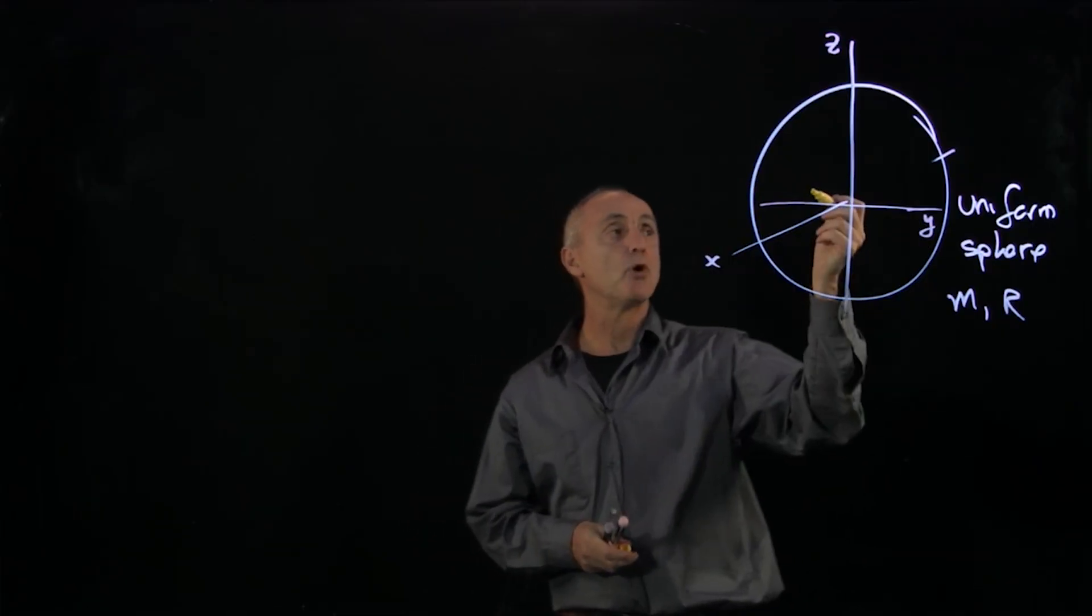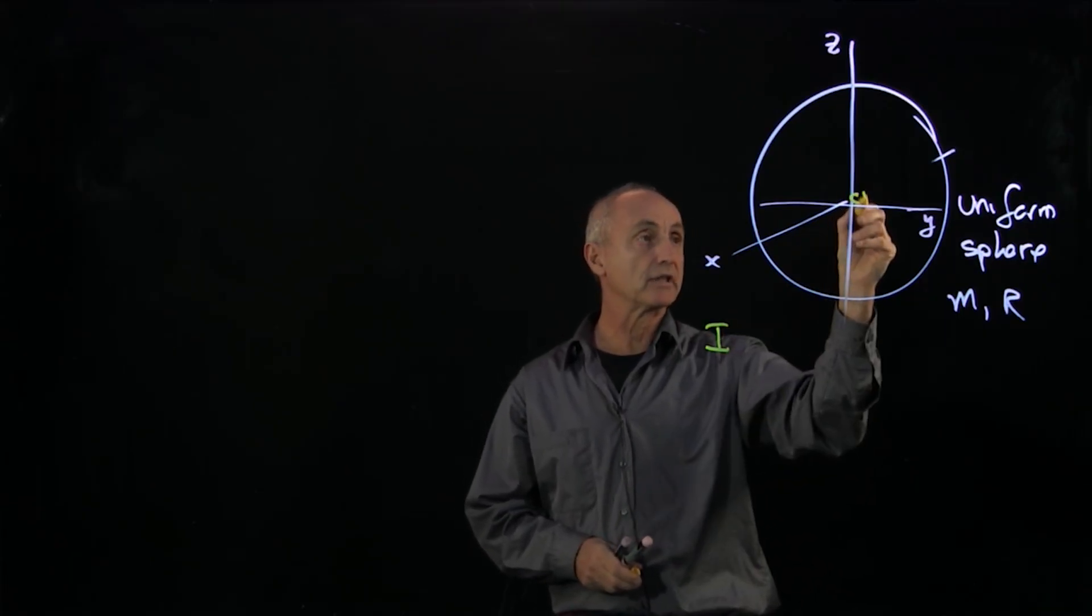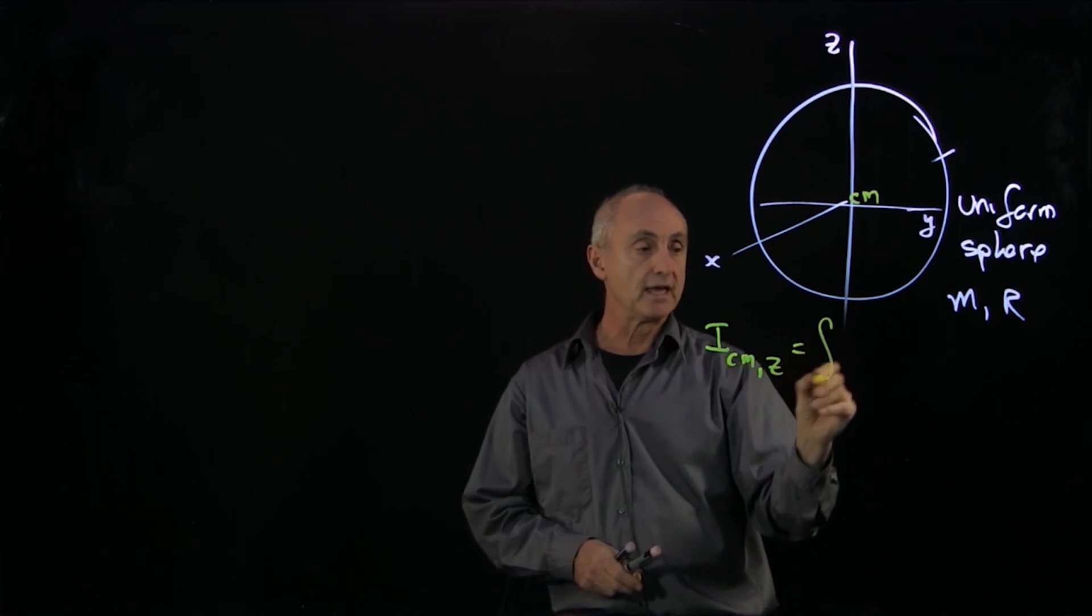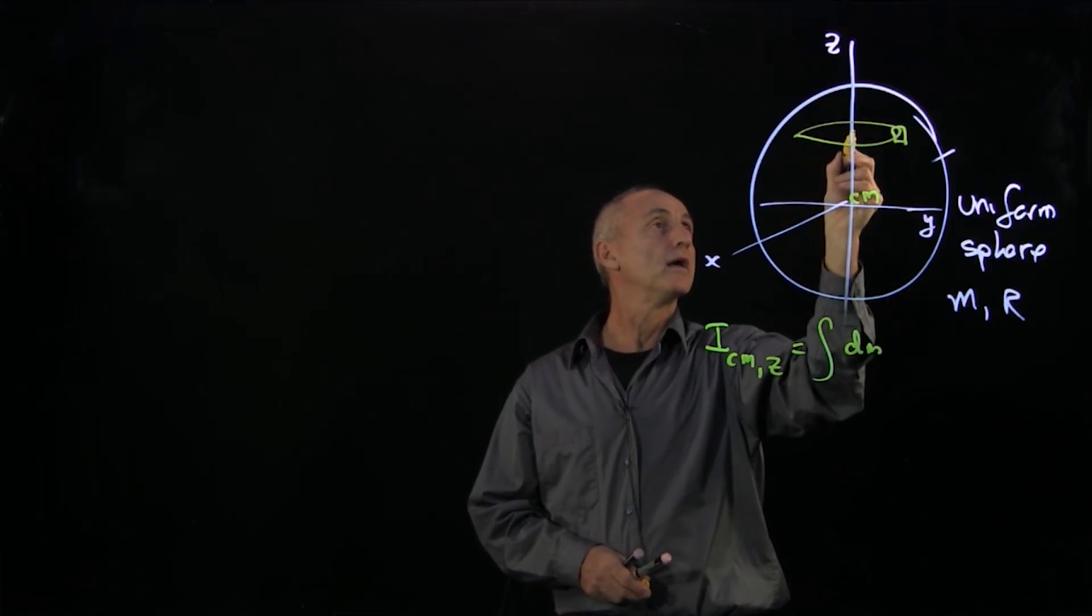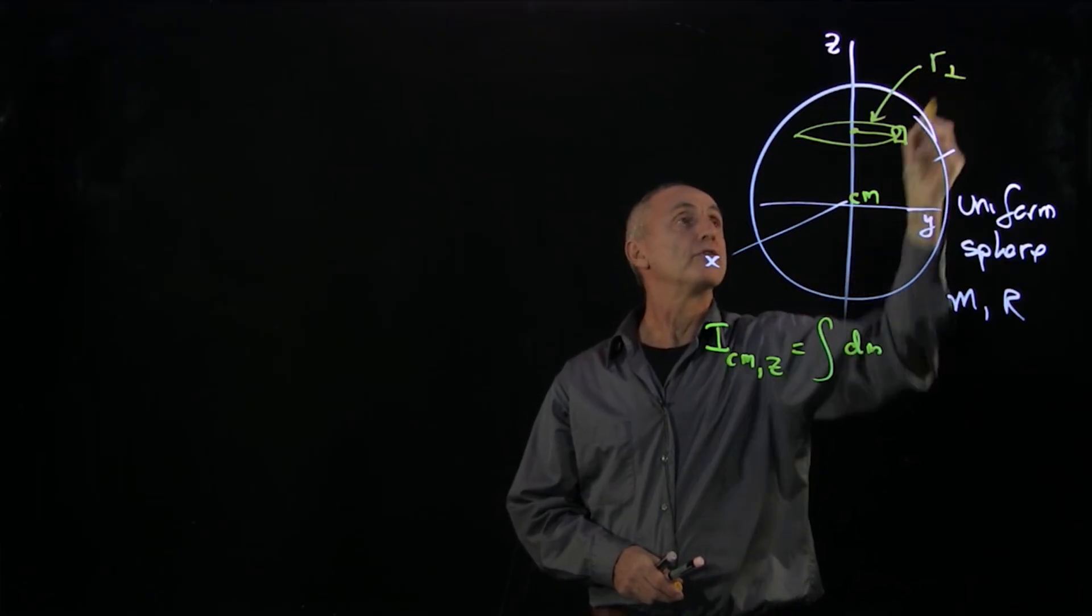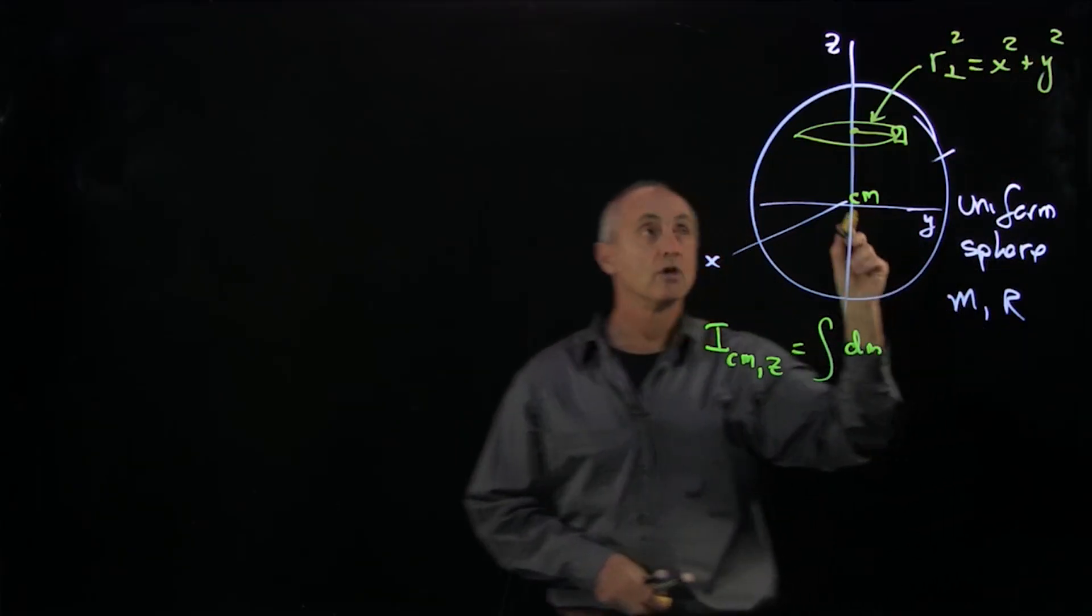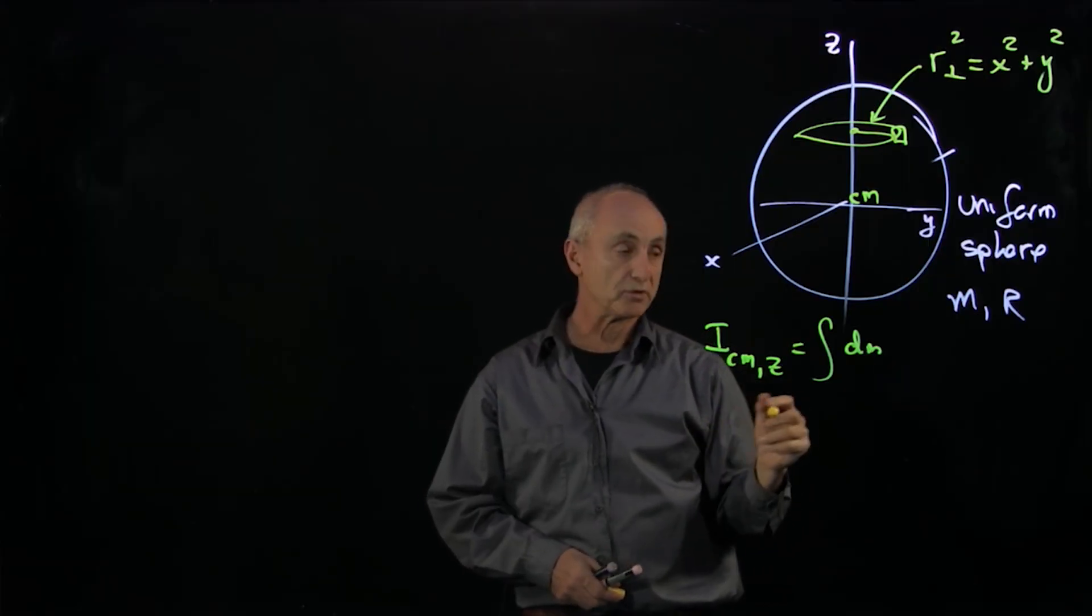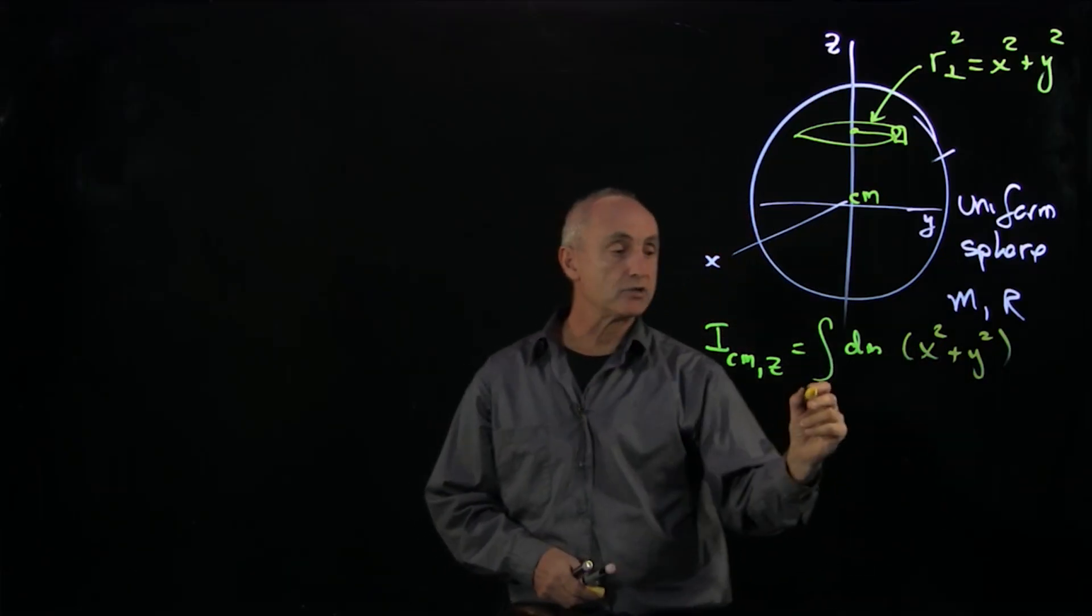And first, let's calculate the moment about the z-axis. If I write down our definition, I'm going to calculate it about the center of mass. We take a mass element. Now, I have to be a little bit careful here, because if you think about what is our r_perp for this mass element, it's actually x squared plus y squared. So the distance here, because it's going in a circle, the radius of that circle is x squared plus y squared. So we have x squared plus y squared, and we're integrating over the sphere.